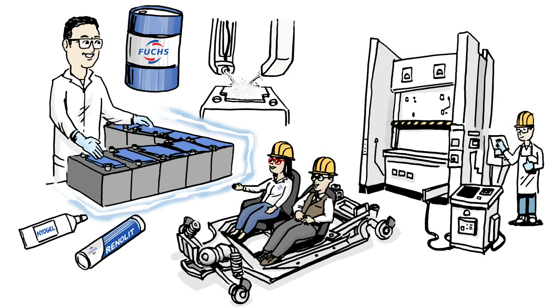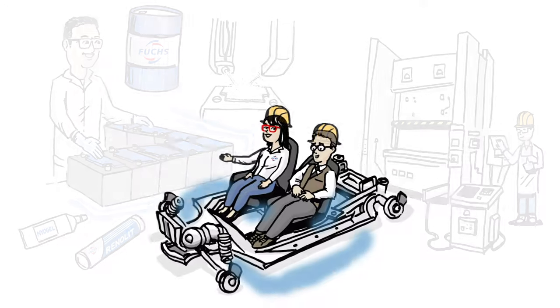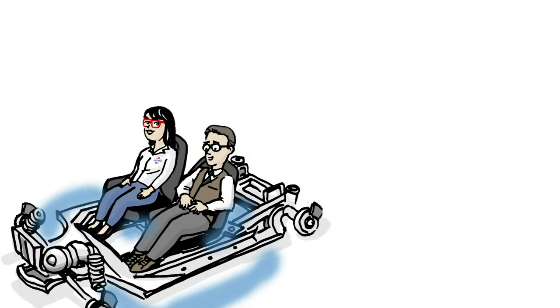Of course, batteries don't work if they're not connected up, so we use Niogel and Renolit to lubricate all the connections and keep the voltage moving. Speaking of moving, let's head on over to Maria.